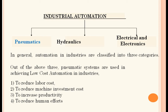In industrial automation, we can go for pneumatics, hydraulics, or electrical and electronics — these are the three categories. Out of the above three, pneumatic systems are used in achieving low-cost automation in industries. Pneumatic automation is a low-cost application used to reduce labor cost, reduce machine investment cost, increase productivity, and reduce human efforts. Pneumatic automation is achievable at low cost compared to hydraulics and electronics.